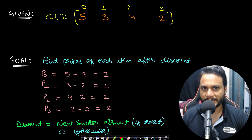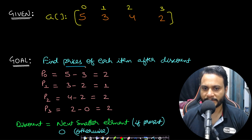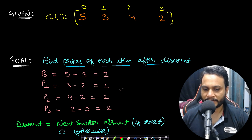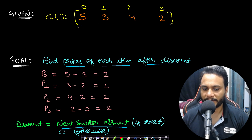If you understand the problem, we are given a set of items with certain prices — let's say 5, 3, 4, 2. Our goal is to find the price for each item after discount. The discount is always the next smaller or equal item. So if there is a next smaller or equal item, that item's price will be the discount; otherwise we add 0.